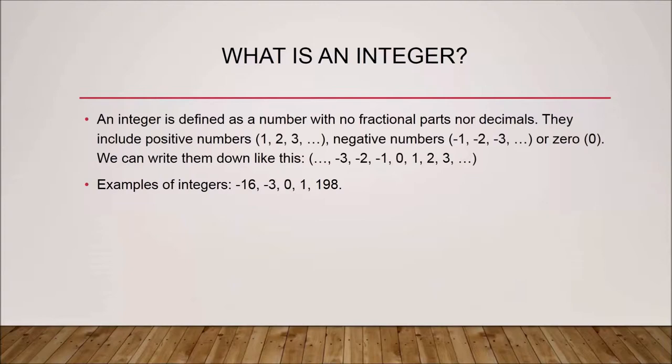An integer can be a positive number — one, two, three, ten, a hundred — or it can be a negative number, such as minus one, minus two, minus three, or zero. We can write them like this: negative infinity, minus three, minus two, minus one, zero, one, two, three, all the way to positive infinity. Examples of integers include minus 16, minus three, zero, one hundred, and ninety-eight.